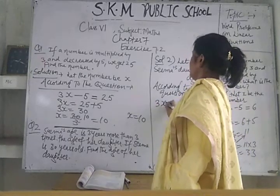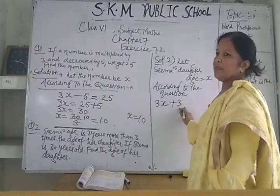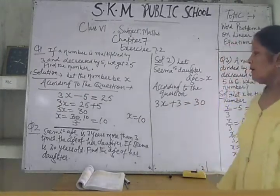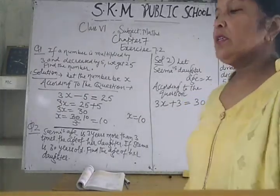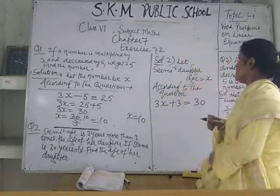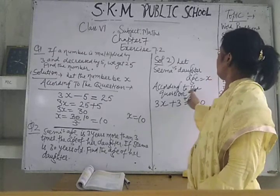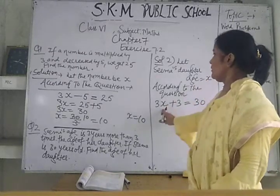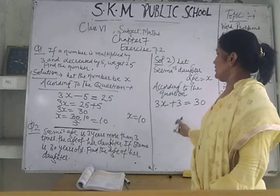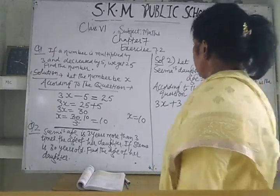We don't know the age of Seema's daughter, so let Seema's daughter's age be x. According to the question, she is 3 times the age of her daughter and 3 years more, so the linear equation will be 3x plus 3 is equal to 30.